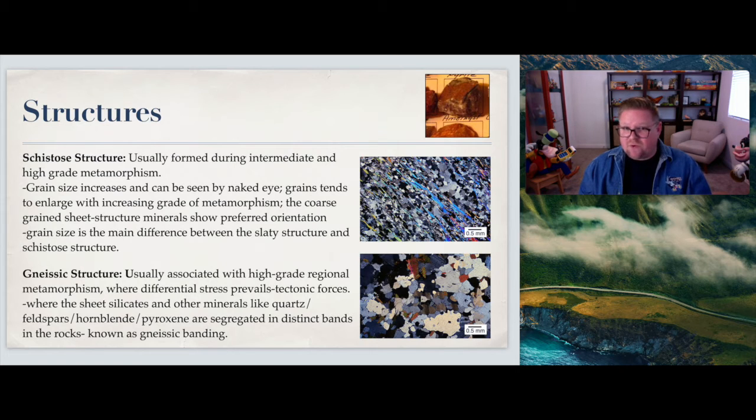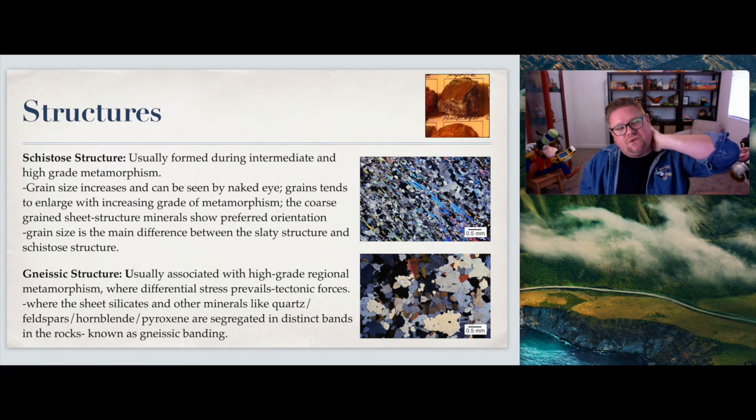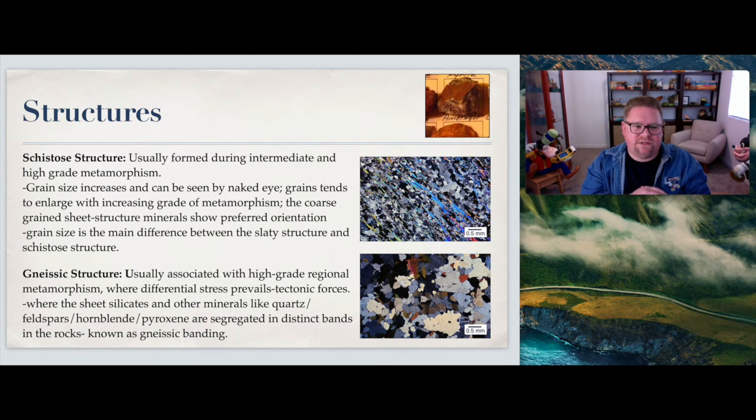Gneissic - gneiss is another rock - is a structure usually associated with high grade regional metamorphism where differential stress will prevail. The sheet silicates and other minerals such as quartz, feldspar, hornblende, pyroxene are segregated into distinct bands within the rock known as gneissic banding. You still will get a type of foliation but it's done differently. My experience between the two - schistose environments and gneissic - I find that schistose is easier for me. It appears to be more metallic in its luster, usually more of a glitter involvement, and it also looks more platy where I can peel it. Whereas gneiss seems to be more re-intergrown where it's not going to come apart, it's not platy, it's not shady in any type, it's really held together well.